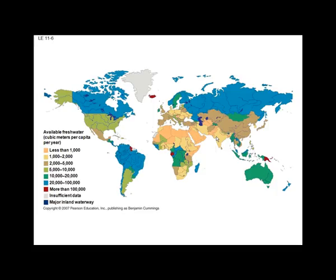Here is a map from the textbook showing available freshwater in cubic meters per capita per year. It ranges from less than 1,000 cubic meters per person in Northern Africa and other dry regions, through 1,000 to 2,000 in other relatively dry areas, all the way up to 20,000 to 100,000 cubic meters per capita per year in very water-rich regions like Canada and parts of South America.